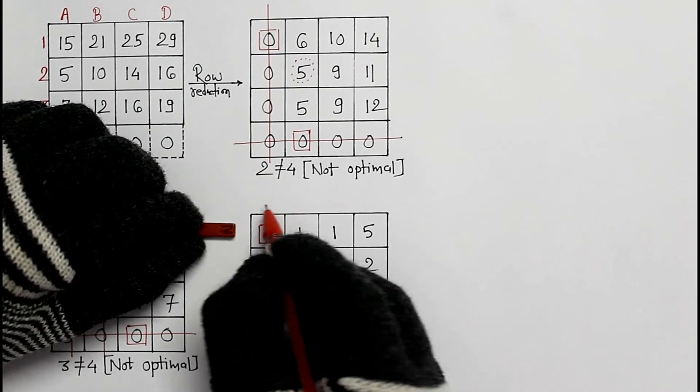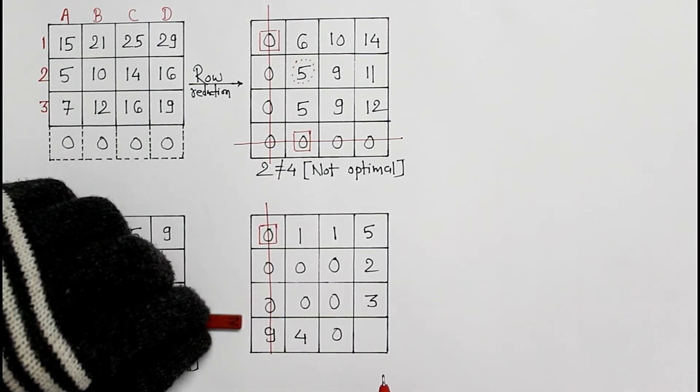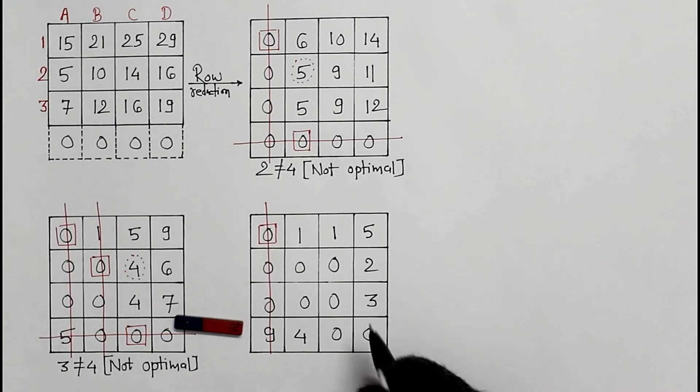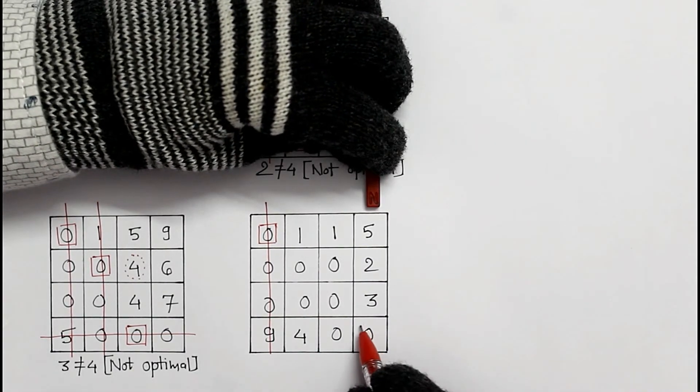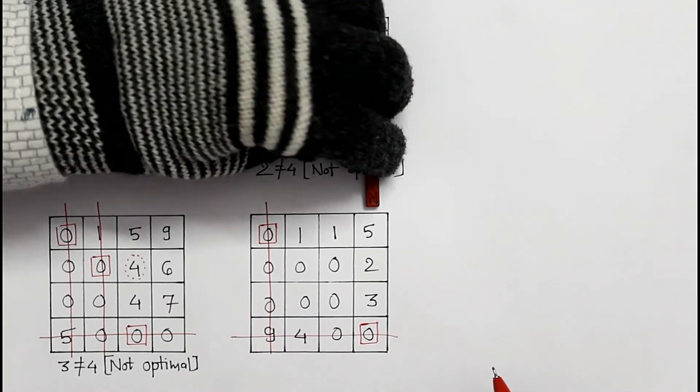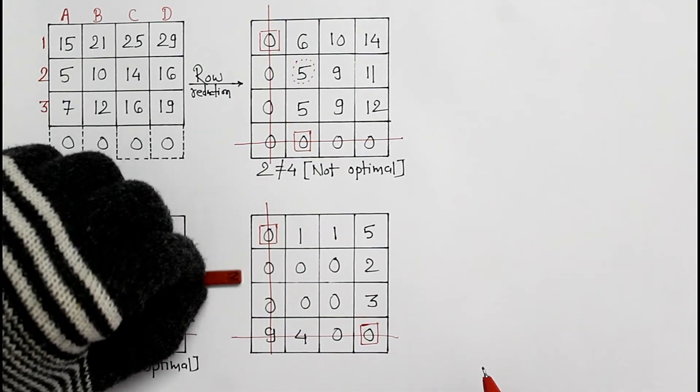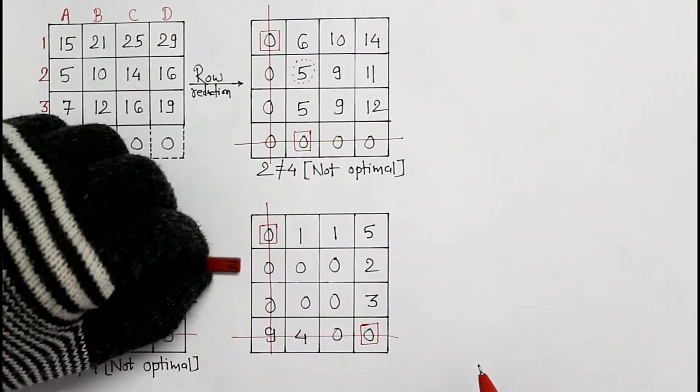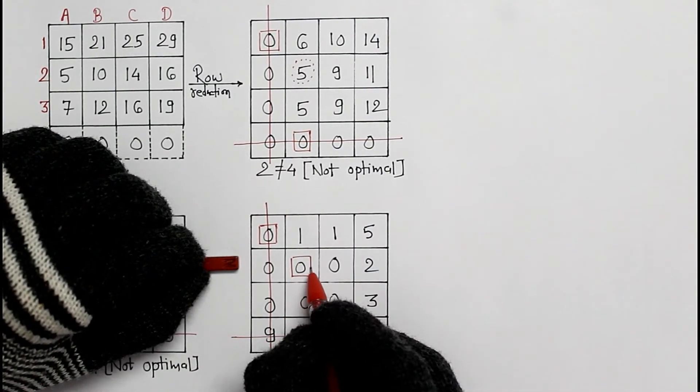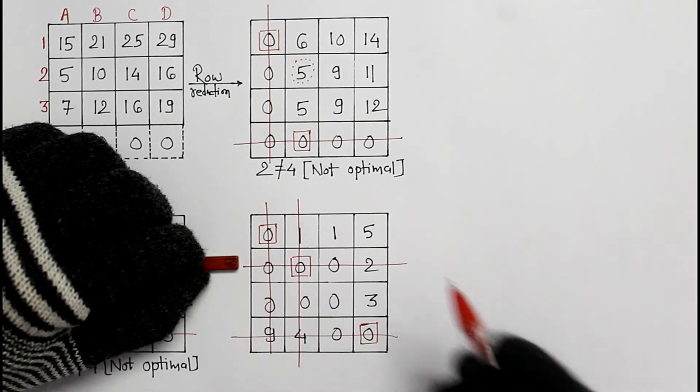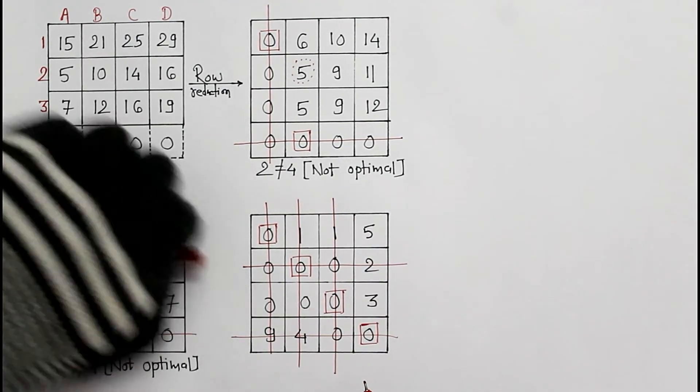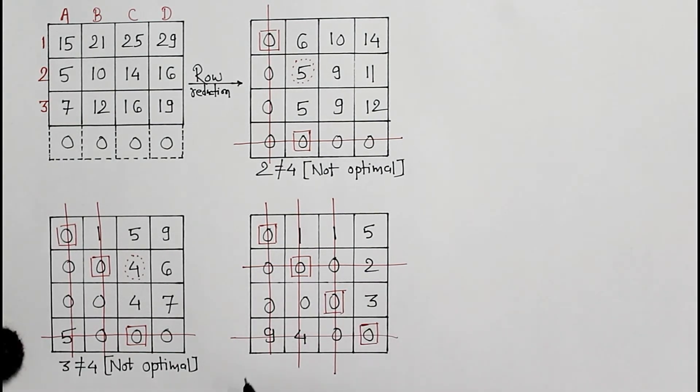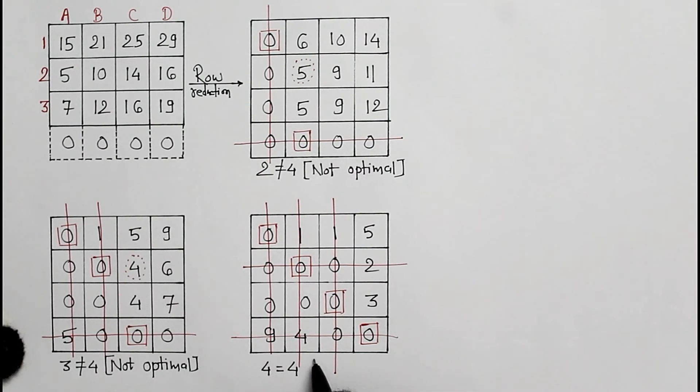Make an assignment, cross the column. More than 1. Here we have a 0 element, so more than 1. Here also, make an assignment, cross the row. Again, we need to make the assignment, so cross the column and row. Total 4 assignments are there, so this is an optimal assignment.